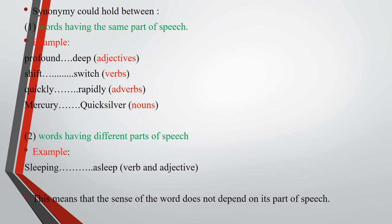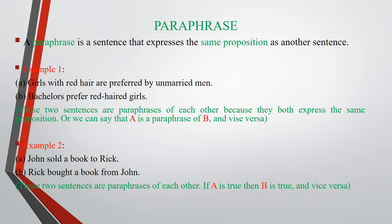Synonymy can hold between words having the same part of speech or words having different parts of speech. For the first type: 'profound' and 'deep' (both adjectives); 'shift' and 'switch' (verbs); 'quickly' and 'rapidly' (adverbs); 'mercury' and 'quicksilver' (nouns). For the second type: 'sleeping' (a verb) and 'asleep' (an adjective) are synonymous. This means that the sense of a word does not depend on its part of speech.